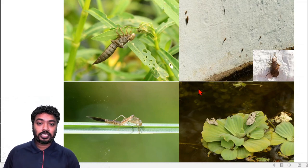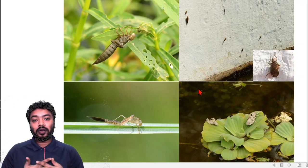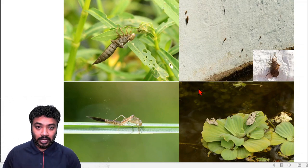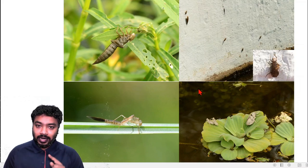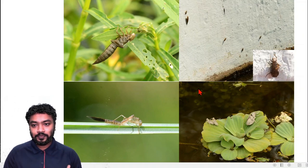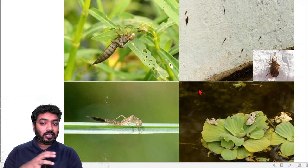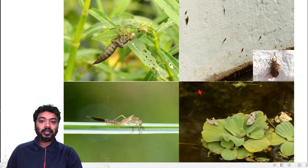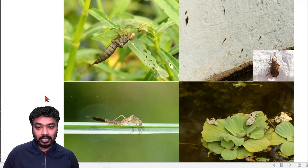Now I will tell you how to collect the exuvia. The exuvia is the best option because it is not living — it is not a life stage. If you collect the exuvia you are not directly doing any harm to that insect, so there is no direct harm to the ecosystem. Where to look for the exuvia? Definitely in the vegetation — whatever submerged and emergent vegetation is beside the water body. These exuvia will be hanging there.